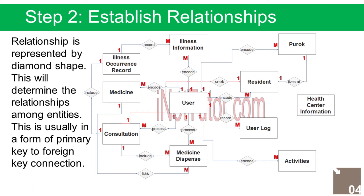Relationship 4: The user records or encodes the resident's personal profile for registration purposes — a 1 to many relationship. Relationship 5: The user records or encodes the list of Poroch in the Barangay — a 1 to many relationship. Relationship 6: The user processes the consultation record of the resident — a 1 to many relationship.